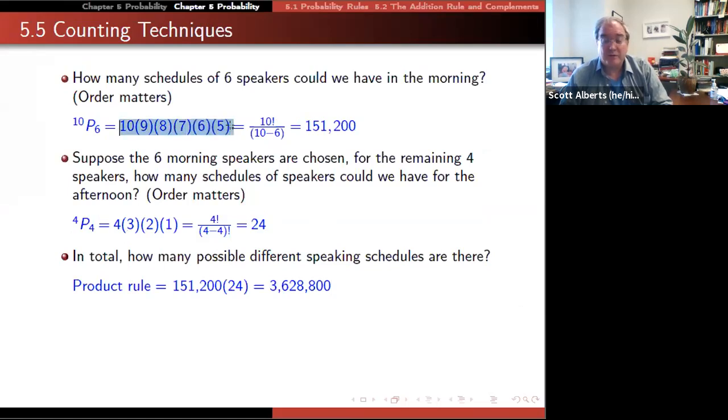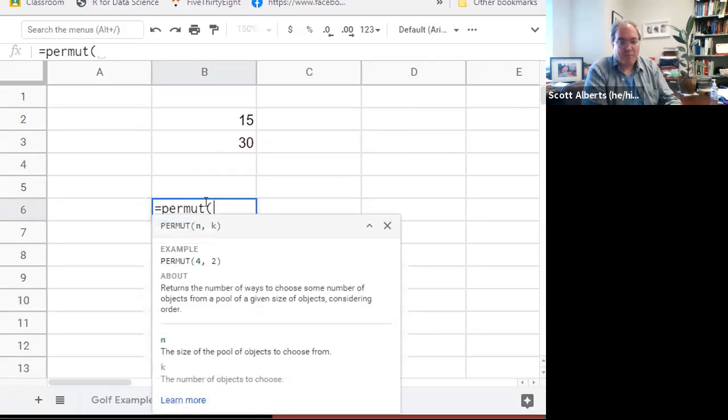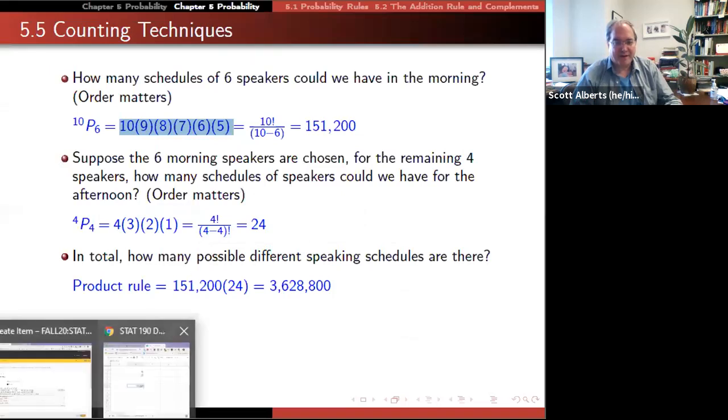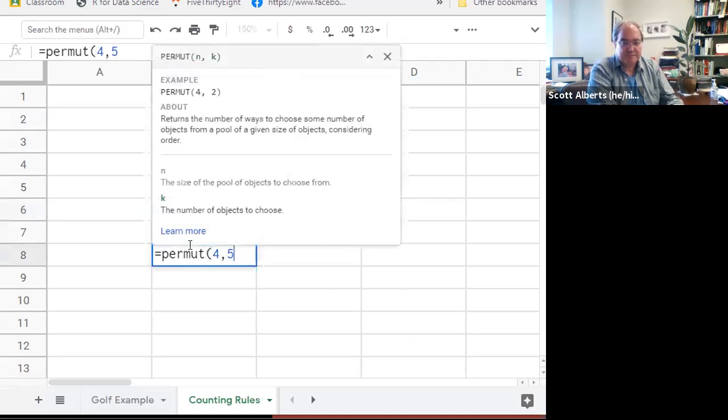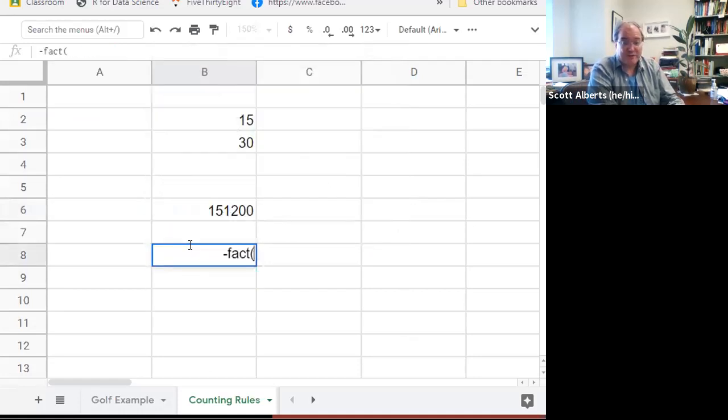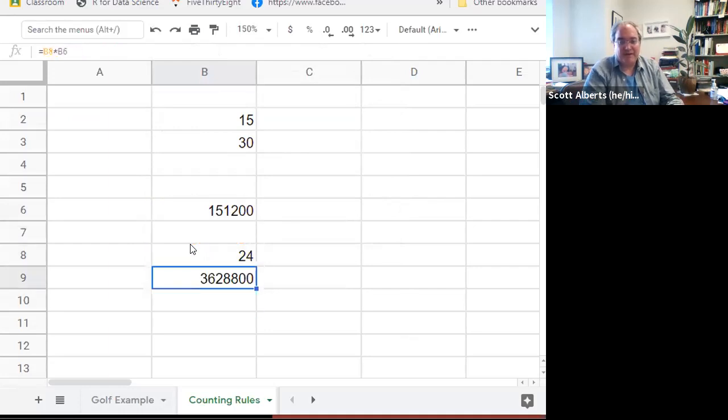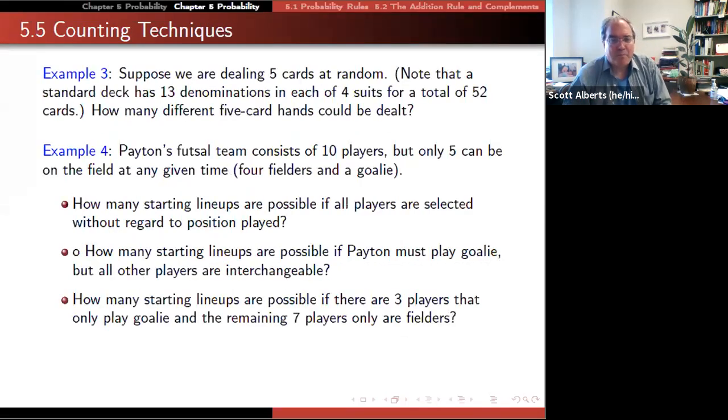All right, again, calculation wise, this is annoying, but you're never going to have to calculate it by hand. And like I said, I think it's easiest to do it in a spreadsheet. So again, if we go back to our spreadsheet and we said permutation of six speakers out of 10, that gives us that 151,000 number that's right here. And then if we set up the remaining four, we could either do that as a permut of 4 comma 4, or for that matter, we could do that as factorial 4. And then the product rule just says multiply those two numbers together. And that gives us that giant number, 3,628,000 that you have there.